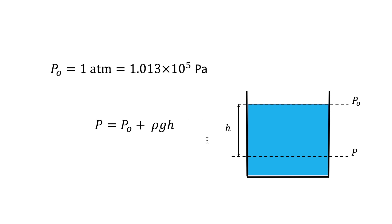Let's consider the hydrostatic pressure in a liquid and how it increases with depth. The atmosphere exerts pressure p₀ on the surface, and the pressure at depth h is equal to p₀ + ρgh, where ρ is the liquid density and g is gravitational acceleration. This means the pressure is the same at all points having the same depth, and any increase in pressure at the surface is transmitted to every point in the liquid.